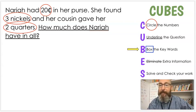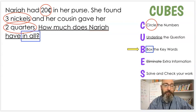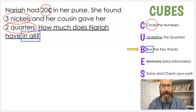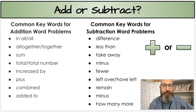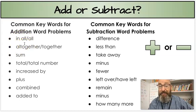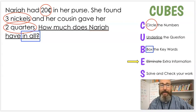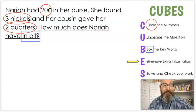Next step is U, underline the question. What is the question? How much does Naraya have in all? So that's what we're trying to figure out. Next is B. B is box the keywords. Do you see any keywords in there? In all. Now, what does in all tell us to do? Add or subtract? Let's check our chart again. Do you see in all anywhere? I do. I see it up here. So what does that mean? Add or subtract? Add. That's right. So we know that we're going to be adding.